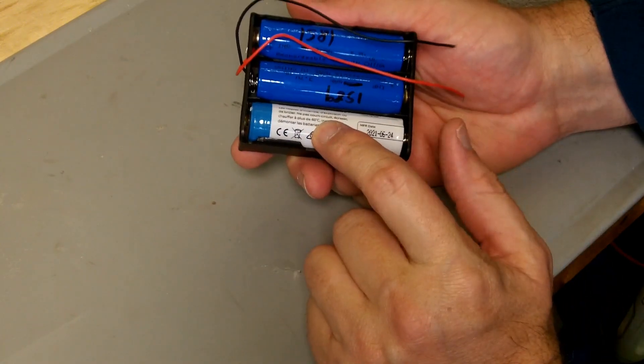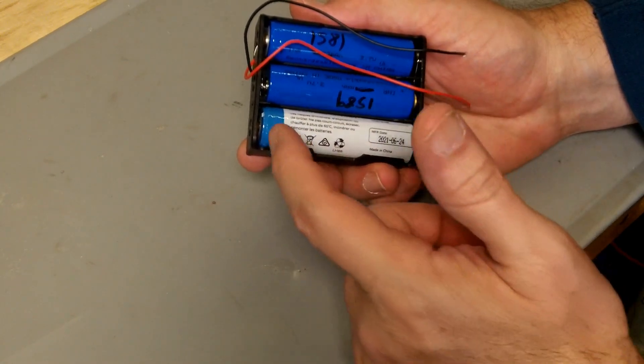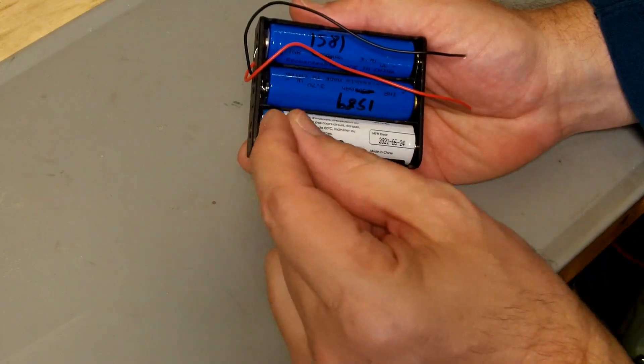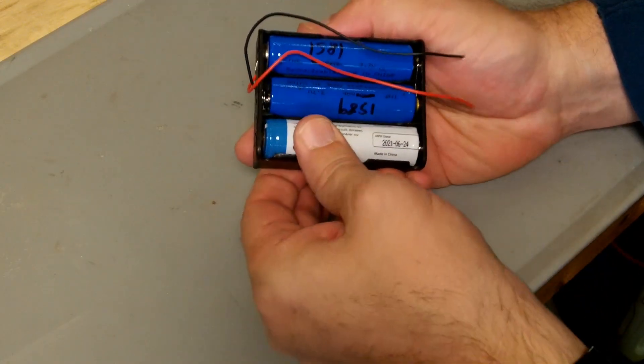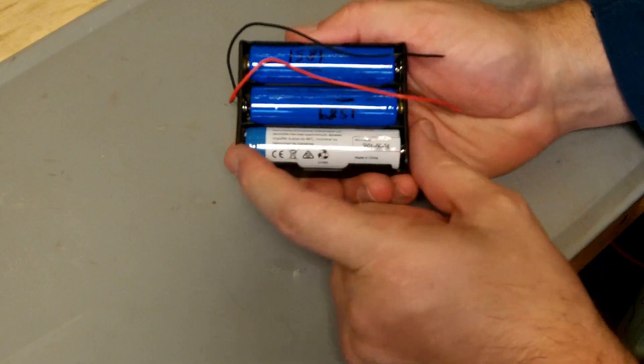Now I believe this cell here does have a BMS, but it doesn't have a charging circuit BMS that requires the USB plug. So it did fit, but it's a little bit tighter than the other two cells.